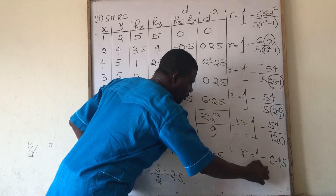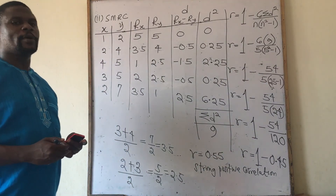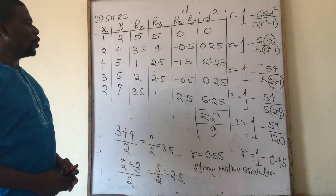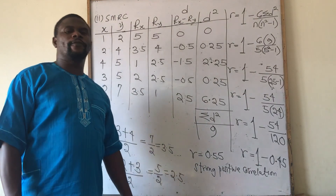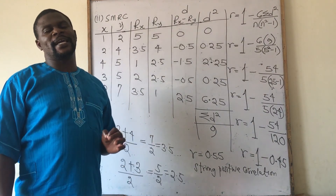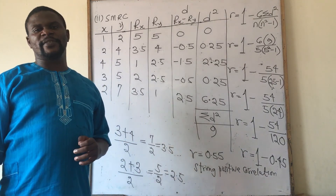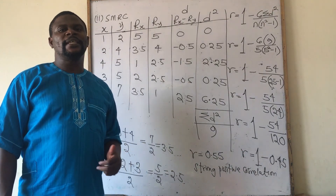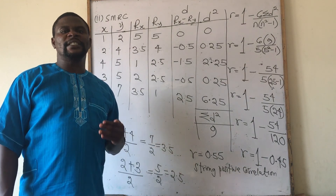Someone might wonder why we don't get the same answer with PPMC — that's because they are two different methods. We have now come to the end of correlation analysis. They can ask you to use PPMC or SMRC. The coefficient of determination will be explained in another video.